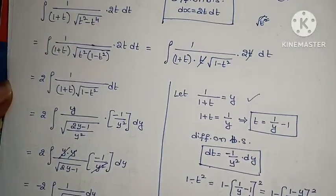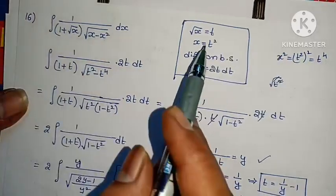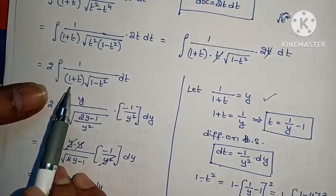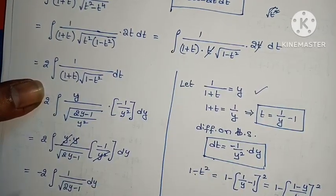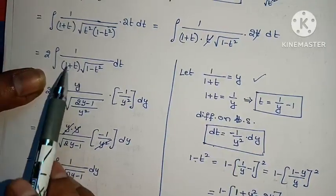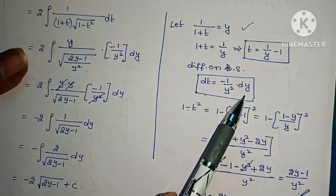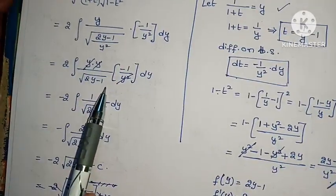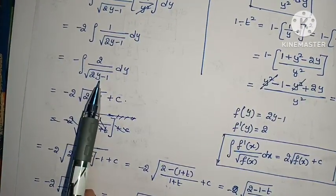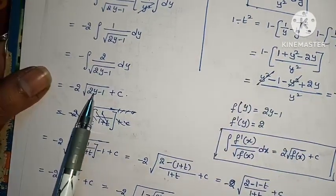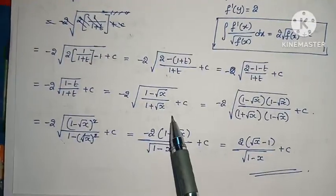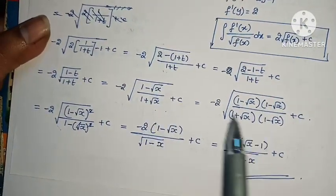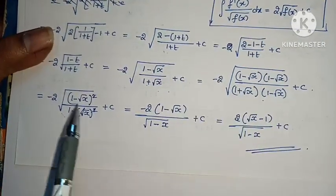This is confusing but easy with practice. To summarize: let root x equal t, then simplify with 1 plus t and root of (1 minus t squared). Let 1 by (1 plus t) equal y and solve. Convert using the 2 root f of x formula, substitute 1 by (1 plus t) back, then substitute t equals root x to get the final answer.